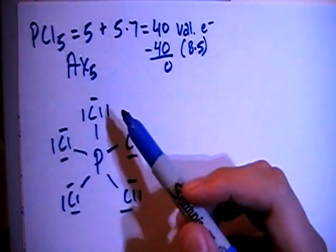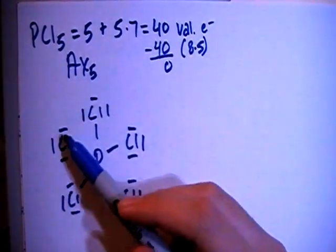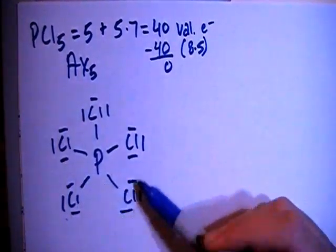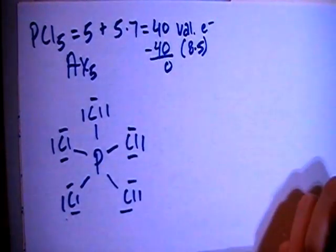Let's count up our electrons. There's 8, 16, 24, 32, and 40. So that looks like that should be it.